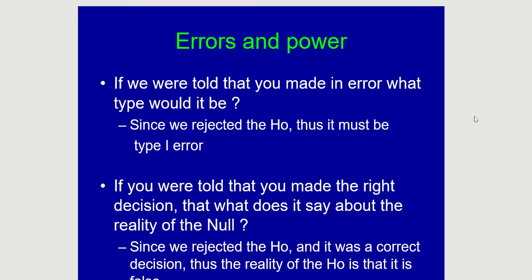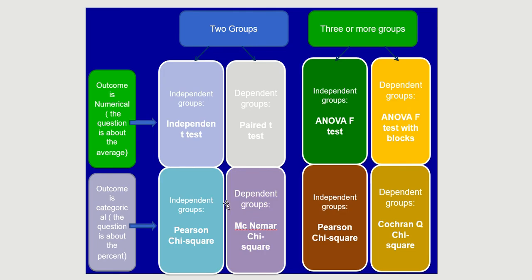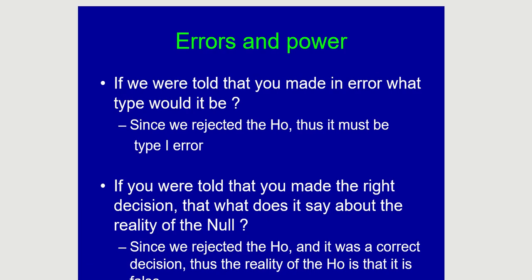With this lecture we've concluded all the chi-squares. The Pearson chi-square was covered in the previous lecture; this lecture covered the McNemar chi-square. We're not covering the Cochrane Q chi-square. What remains is the situation with three or more groups with a numerical outcome, where we'll use one of the two ANOVAs — ANOVA with blocks or ANOVA without blocks. I hope you enjoyed this lecture and see you soon.